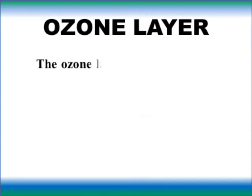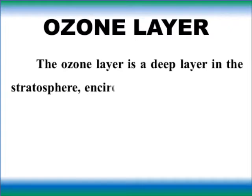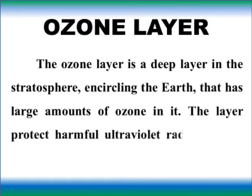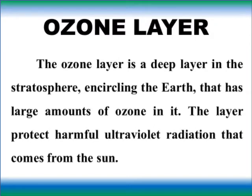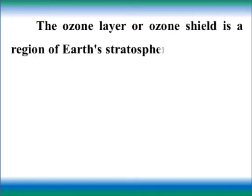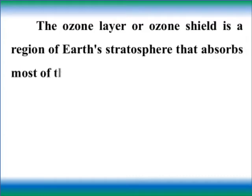The ozone layer is a deep layer in the stratosphere, encircling the earth, that has large amounts of ozone in it. The layer protects against harmful ultraviolet radiation that comes from the sun. The ozone layer, or ozone shield, is a region of earth's stratosphere that absorbs most of the sun's ultraviolet radiation.